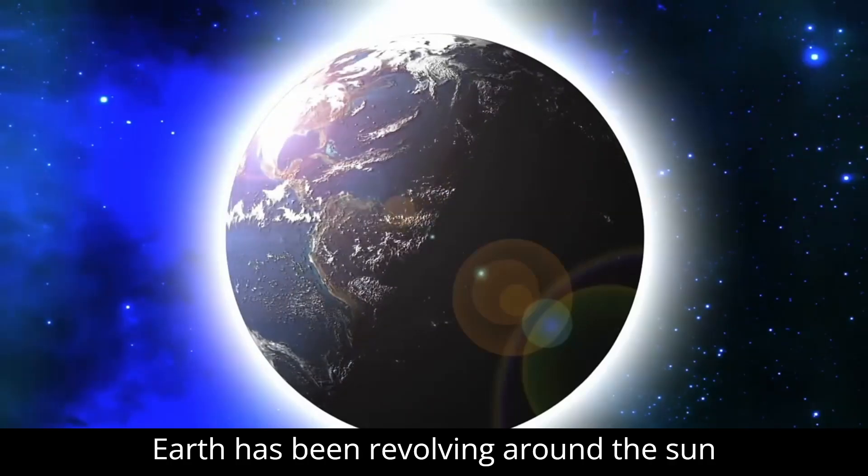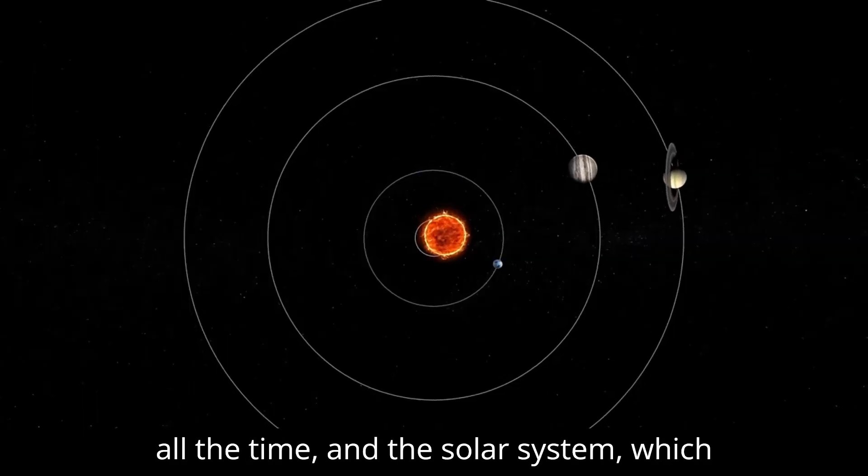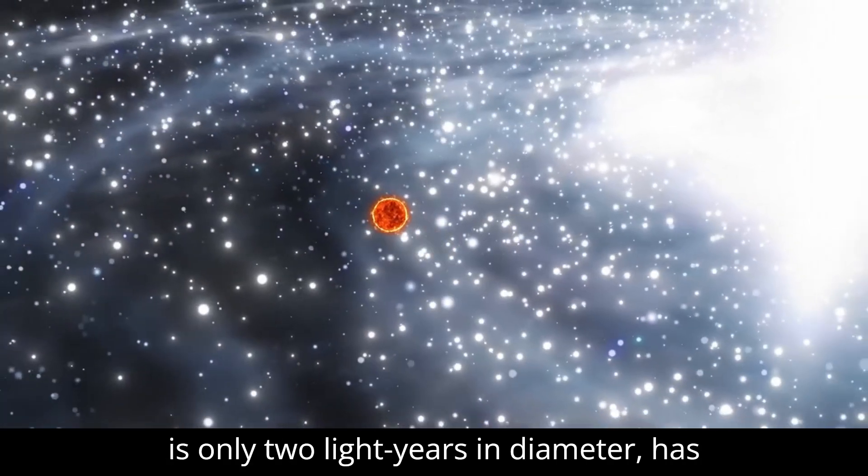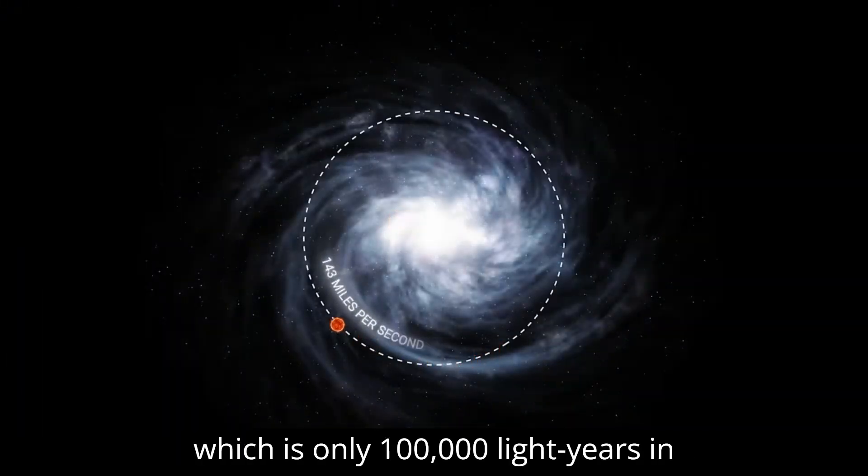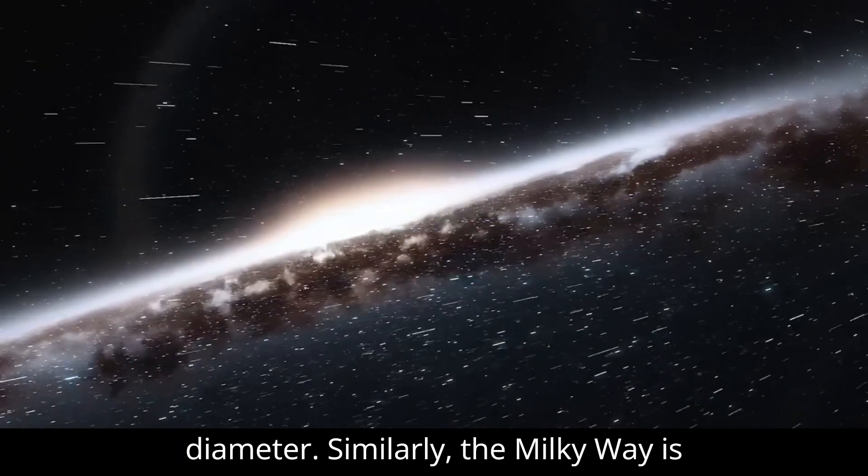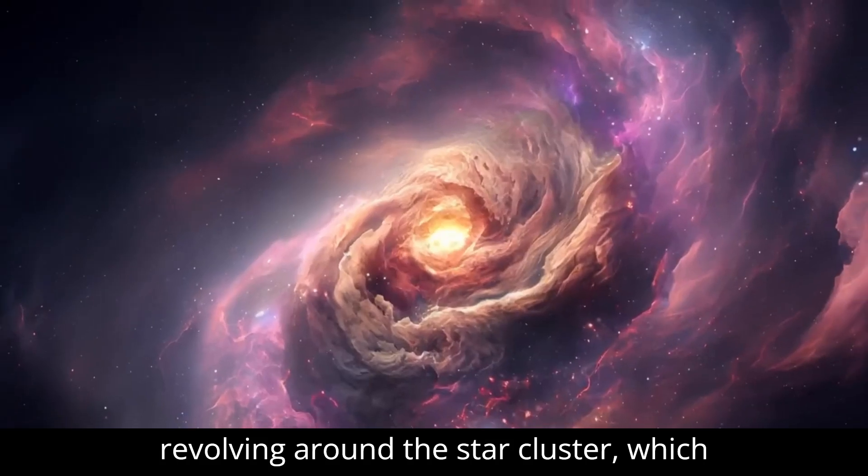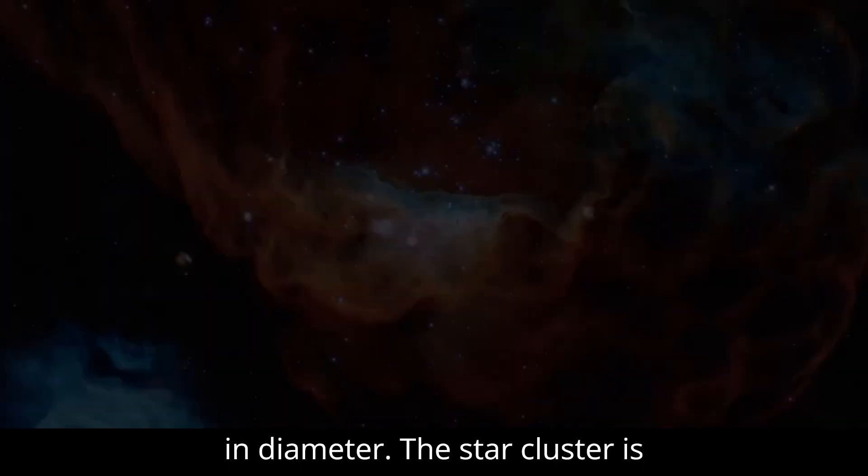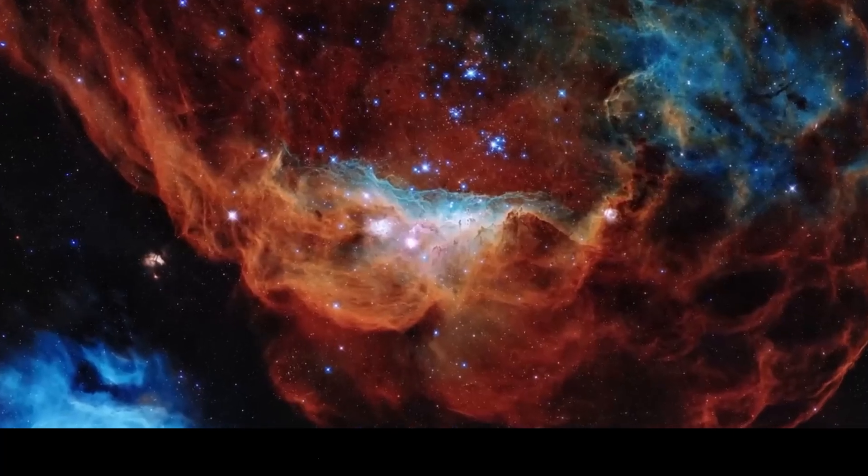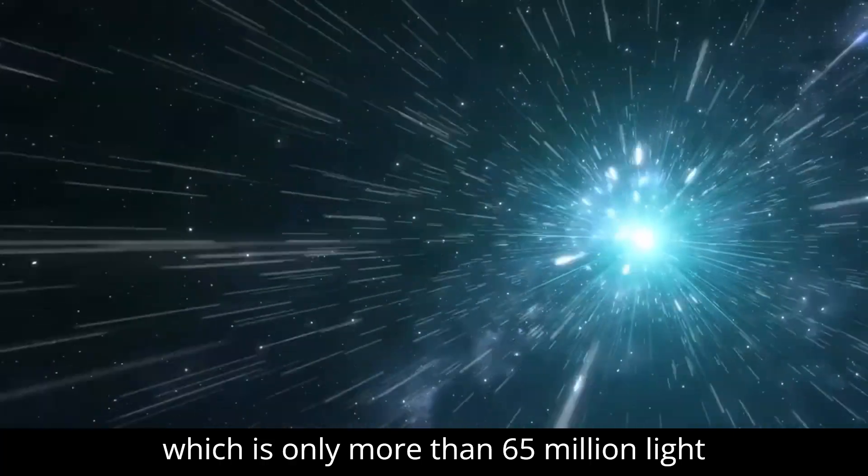Our Earth has been revolving around the Sun all the time. And the solar system, which is only two light-years in diameter, has been revolving around the Milky Way, which is 100,000 light-years in diameter. Similarly, the Milky Way is revolving around the star cluster, which is only more than 10 million light-years in diameter. The star cluster is revolving around the supernova group, which is more than 65 million light-years in diameter.